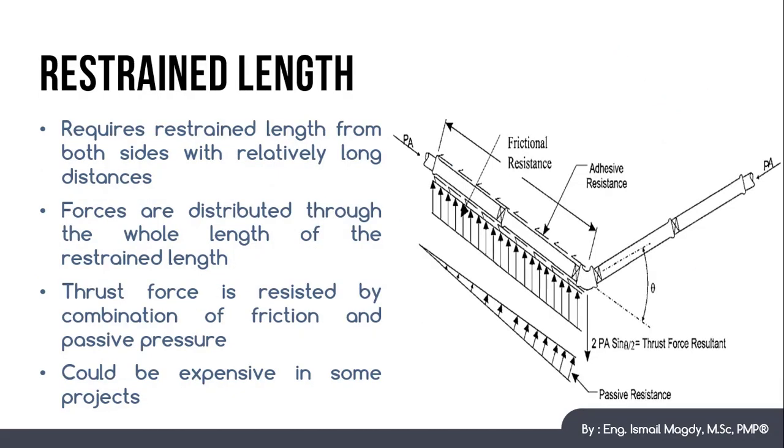Third option we are going to talk about here is called restrained length. In this option we don't have to construct any additional structures. However, we need to provide a certain length of restrained joints at both sides of the bends. And the thrust force is resisted by a combination of the friction force between the pipes and the surrounding soil as well as the soil passive pressure behind the pipe.